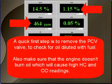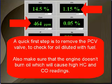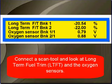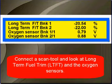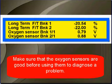A quick first step is to remove the PCV valve while the engine is running. You're going to check for oil diluted with fuel. Also, make sure that the engine doesn't burn oil, which will cause high HC and CO readings. Then connect your scan tool, select scan data, and look for long-term fuel trim and compare it to the oxygen sensors.